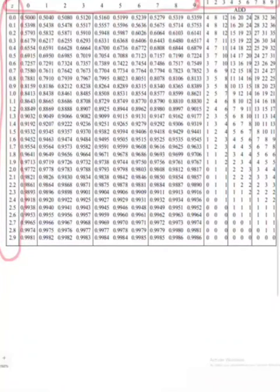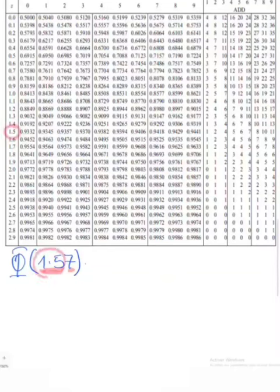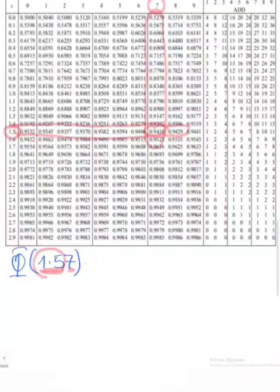To use the table: the first column contains the z value with its first decimal place, the top row represents the second decimal place, and the far-right section gives the third decimal place adjustment. Suppose I want to find Φ(1.57). I first locate 1.5 on the first column, then locate 7 on the top row. Where they intersect gives the cumulative probability for z = 1.57, which corresponds to 0.9418.